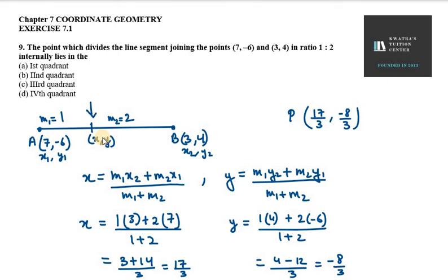Now that we know the coordinates, let's determine which quadrant point P lies in. You can see that x is positive and y is negative.